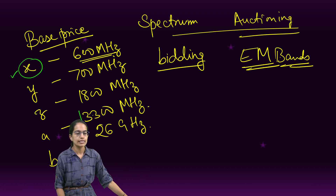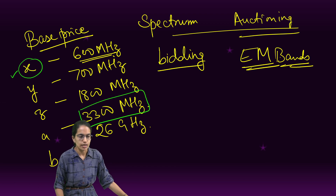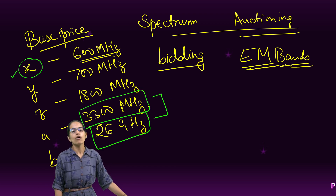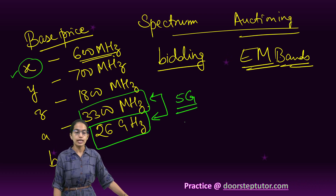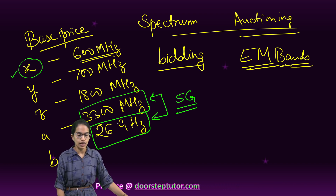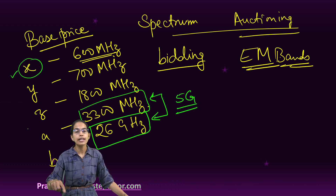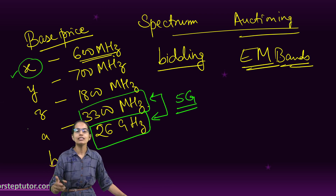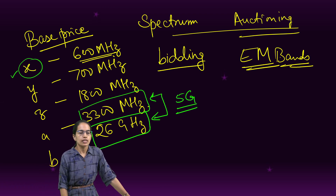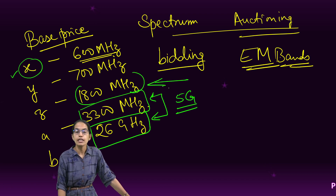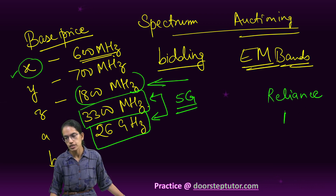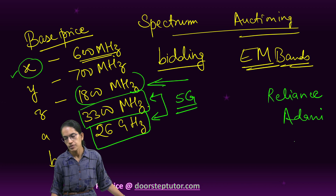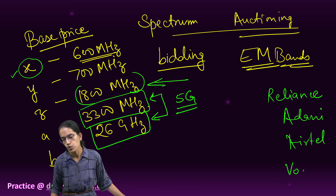For example, 3300 megahertz and 26 gigahertz are two bands sold for 5G purposes, so there is higher demand for them and bidding could go higher. In the recent 5G auction, there was rigorous bidding for 1800 megahertz, with four important competing parties: Reliance Jio, Adani, Airtel, and Vodafone.